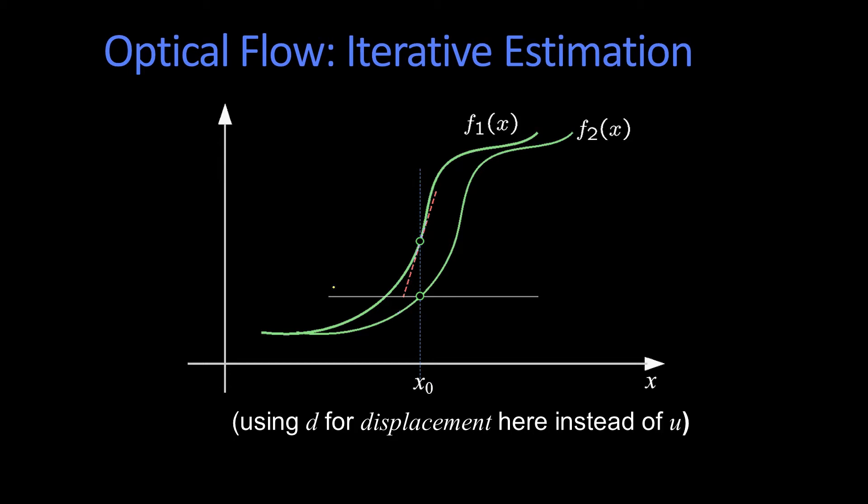So here I have two curves, f1 and f2, taken at two different times. And here I'm just looking at this point x0. This is the value at time 2, this is the value at time 1, and that's true for all of these. And the question is, how much does the curve move?